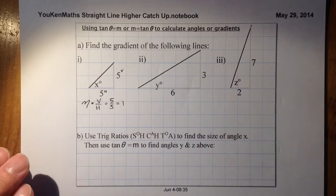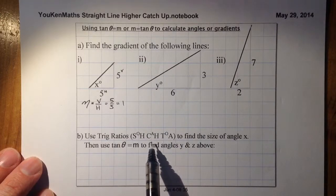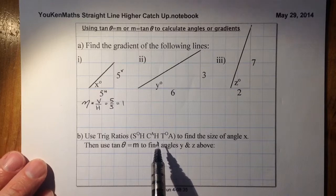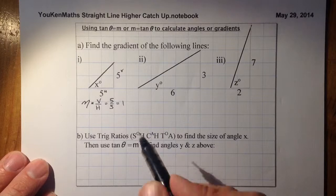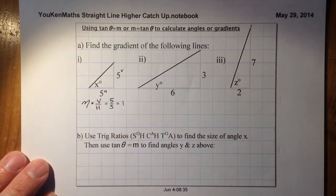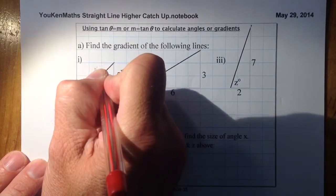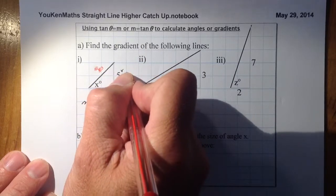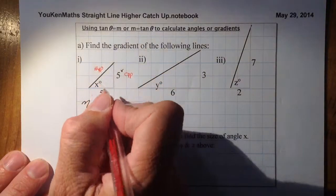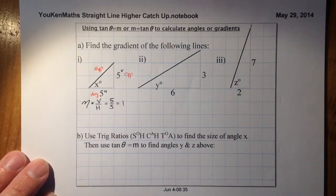Once I've got that gradient, I can look at part B and use the trig ratios to find the size of angle x. To do that, I'll label up my triangle with the hypotenuse, the opposite side — because that's right opposite the angle — and the adjacent side. That's the triangle labeled up ready for SOHCAHTOA work.